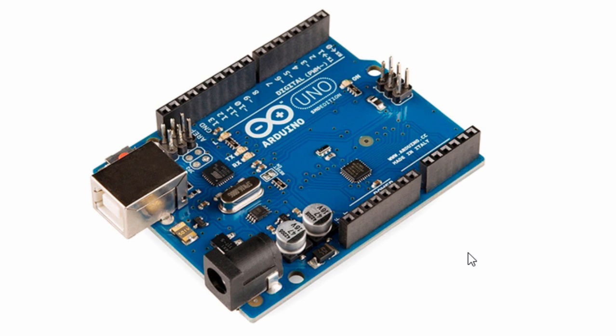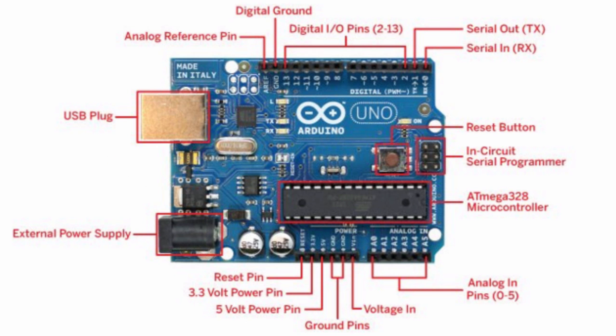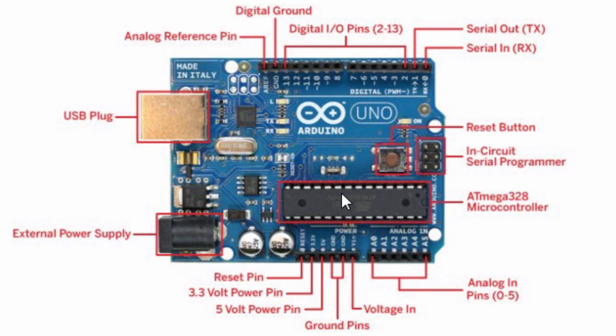You can also build your own Arduino board, as the circuit diagram is freely available as open source. The most popular is the Arduino Uno, which is the cheapest — you can get one for about 30 US dollars depending on where you live. It's the simplest to start with and is based on the ATmega328 microcontroller, which has 38 kilobytes of flash memory for storing the program and 2 kilobytes of SRAM.